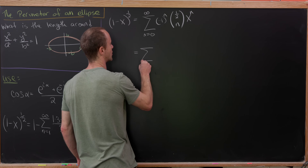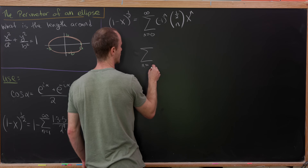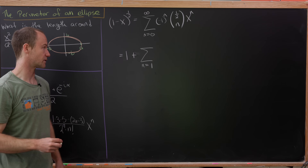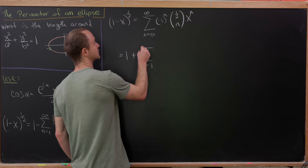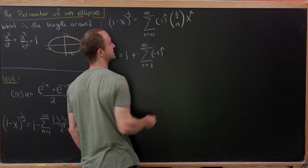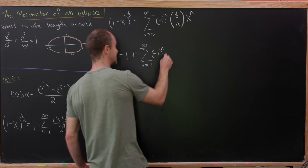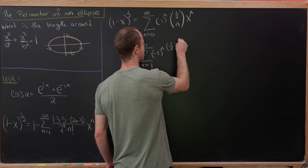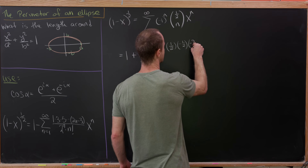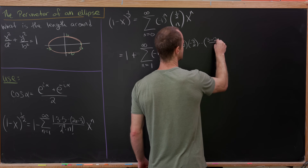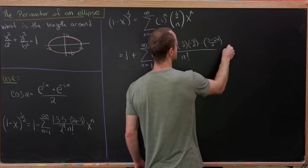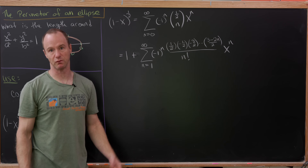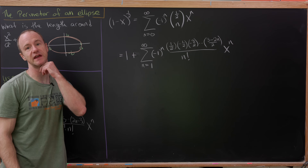Now let's rewrite this where we've started to expand our binomial coefficient. Let's pull out the 0th term — evaluating at n = 0 gives 1. Left over, we'll have the sum as n goes from 1 to infinity. We have (−1) to the n, and then (1/2 choose n) will be a descending product of n terms starting at 1/2 in the numerator: 1/2 times −1/2 times −3/2, all the way down to (3 − 2n)/2, over n factorial, times x to the n.